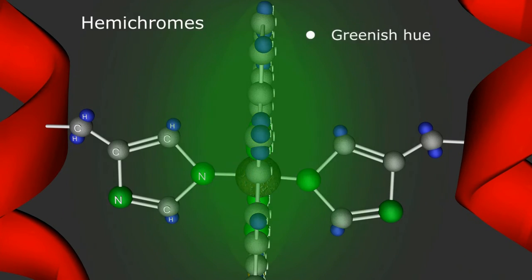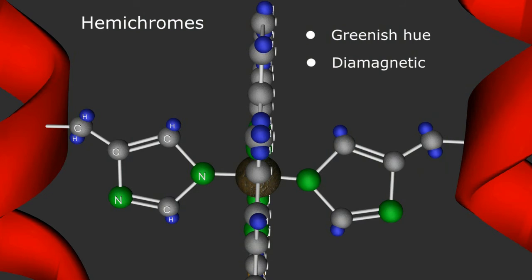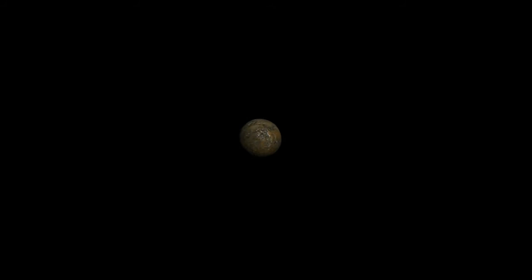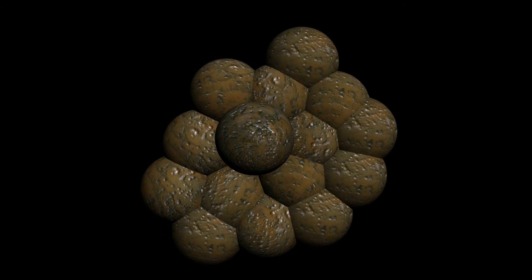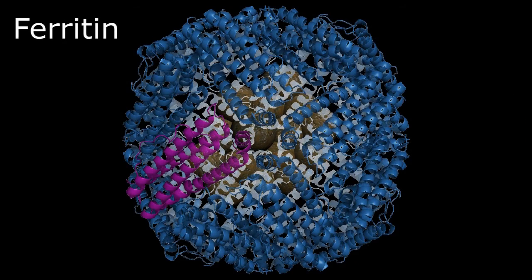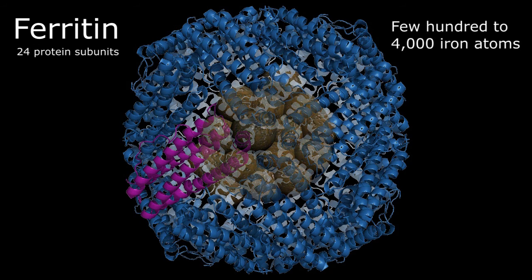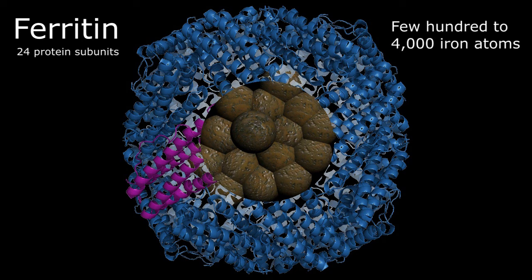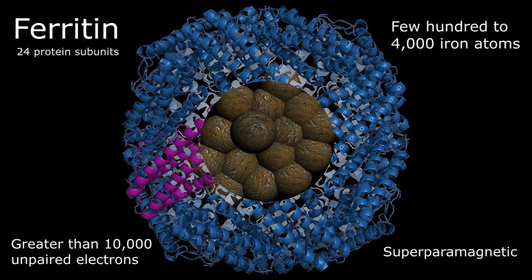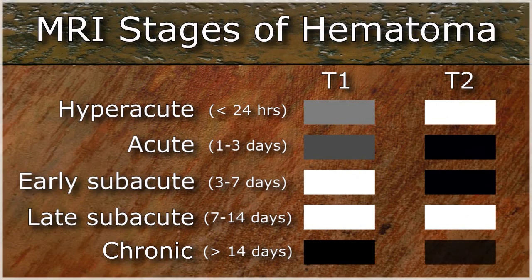Hemichromes have a greenish hue and could explain the greenish color seen on aging red meats. These complexes are also diamagnetic and therefore do not exert a significant effect on the local MR signal. However, simultaneously, some of the free iron cations released in the process are gathered into normal local storage units called ferritin — basically a hollowed-out ball of 24 protein subunits holding a few hundred to a few thousand iron atoms in its core. This cluster of iron cations has more than 10,000 free electrons, making it superparamagnetic, which markedly decreases T2 relaxation.